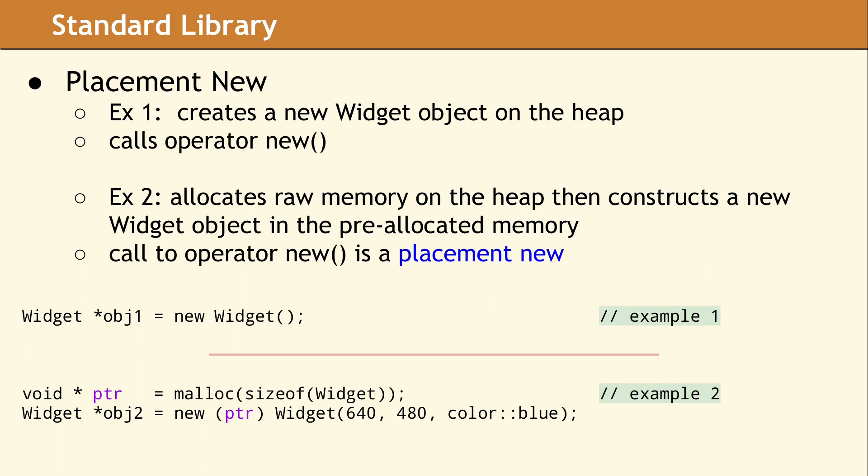Example 1 should be very familiar to most C++ programmers. This one line of code does four things. It declares a variable, allocates memory, instantiates an object, and then initializes the variable to point to the new object. This is the normal way to create a new object on the heap by calling operator new.